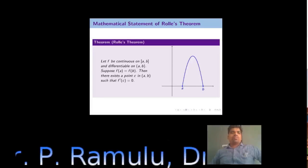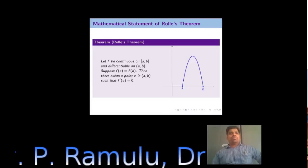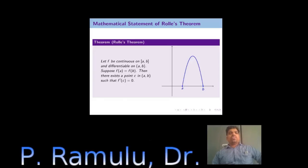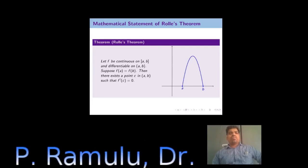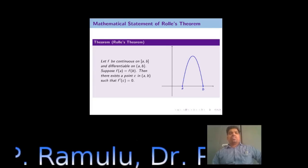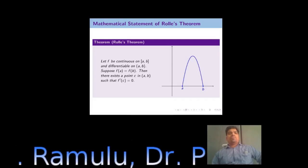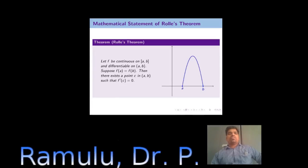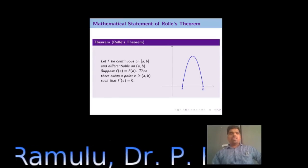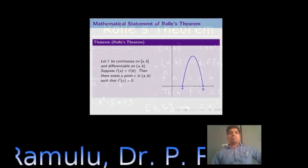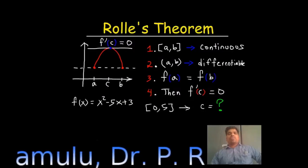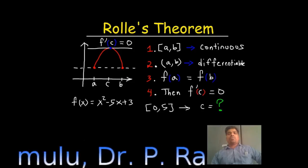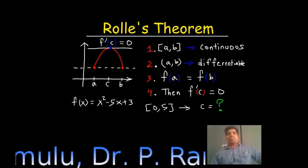Rolle's Theorem: A function f is continuous on closed interval [a, b] and differentiable on open interval (a, b). Suppose f(a) equals f(b), then there exists a point C in open interval (a, b) such that f'(C) equals 0.